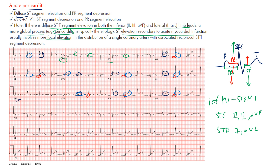Just to review: you're looking for diffuse ST segment elevation and PR depression throughout the EKG, and then reciprocal changes in lead AVR — specifically PR elevation and ST segment depression.